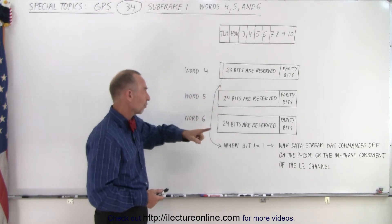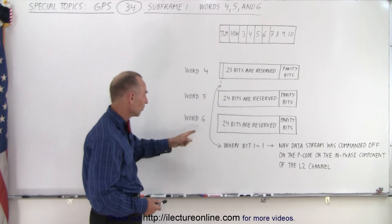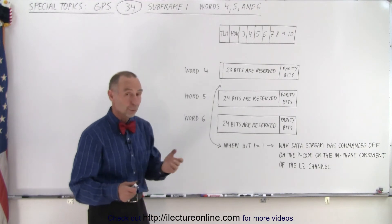So in word 4 we have 23 reserved bits, in word 5 we have 24 reserved bits, and in word 6 we have 24 reserved bits.